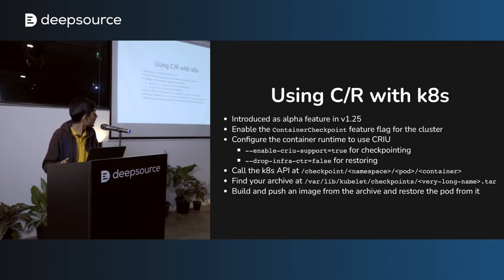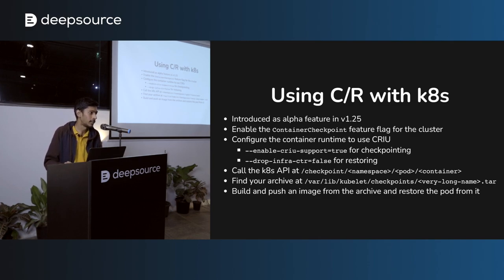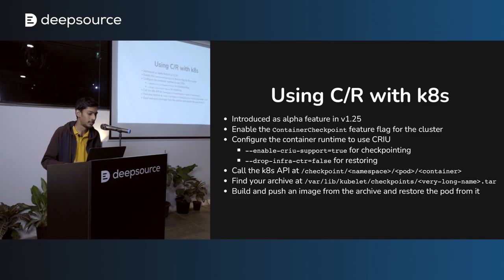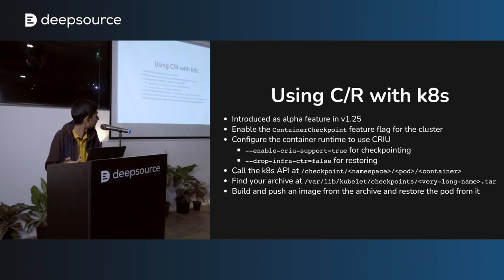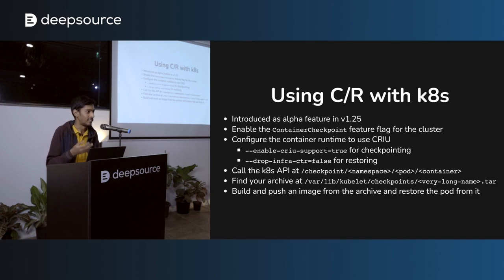To use this today with Kubernetes, you first need to enable the container checkpoint feature flag. After that, you configure your high-level container runtime to enable checkpointing and restoring — there are two flags that enable CRIU support, and you need a second flag to instruct the runtime not to drop the infra container when restoring. There's a standard Kubernetes API you can access at the slash checkpoint endpoint. CRIU will checkpoint the target process and give you an archive at /var/lib/kubelet/checkpoints, named with the namespace, pod, container, and timestamp.